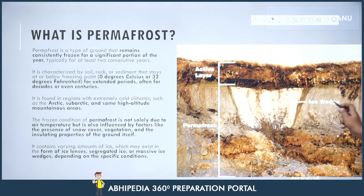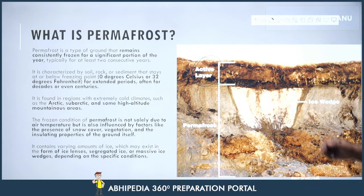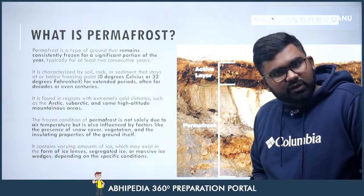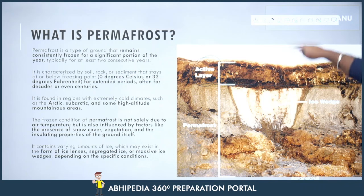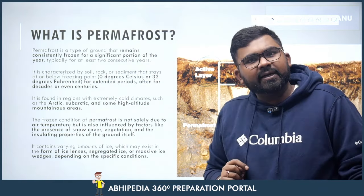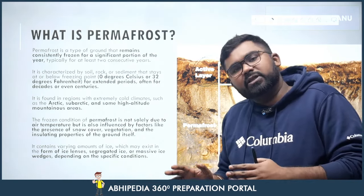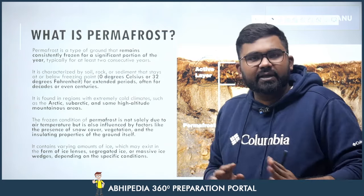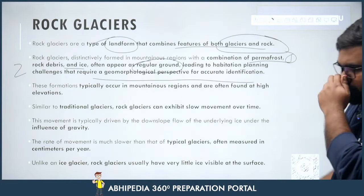If you can see here, there is an ice wedge below — this is called the permafrost layer. Above it is the active layer, where construction can happen. But if there are no stable properties below, the water flows up and the ground can cave in. This is why urban planning in such regions must account for permafrost structures.